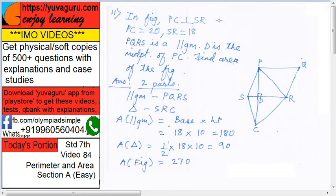In the given figure, PC is perpendicular to SR. PC equals 20, SR equals 18.